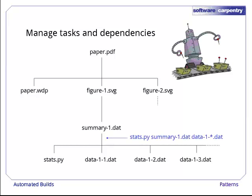To recreate summary1.dat from the raw data files, we run a Python script we wrote ourselves called stats.py. We're still updating that and fixing bugs as we find them. Each time we change it, we want to regenerate summary1.dat, so stats.py is actually another dependency of summary1.dat, as well as being the tool used to create it.